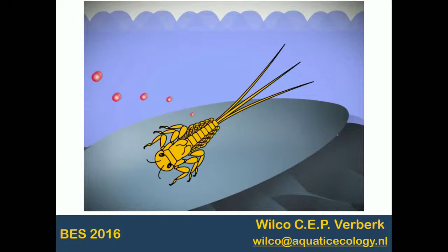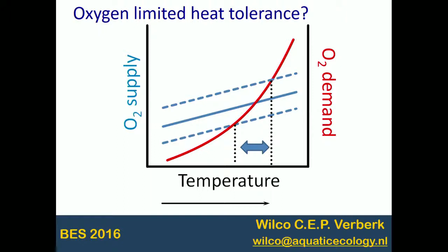To test this concept you can make some predictions. A straightforward one would be that if thermal tolerance is set by oxygen, then if you lower the amount of oxygen in the environment, tolerance limits should decline. Perhaps a stronger test: if you increase oxygen levels in the environment, tolerance levels should go up.